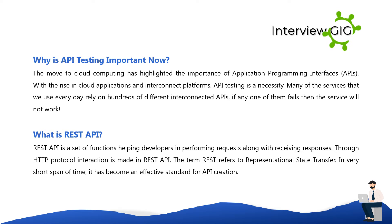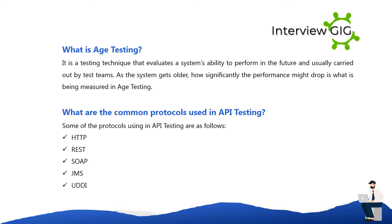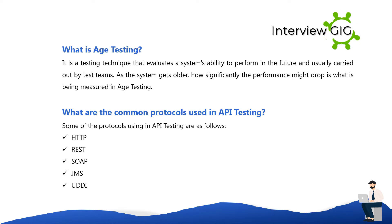What is age testing? Age testing is a testing technique that evaluates a system's ability to perform in the future. It is usually carried out by test teams, and as the system gets older, how significantly the performance might drop is what is being measured in age testing.